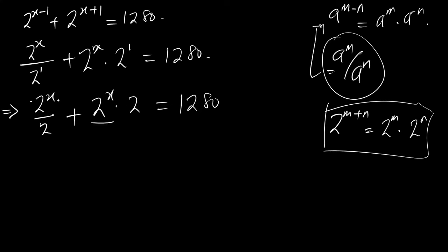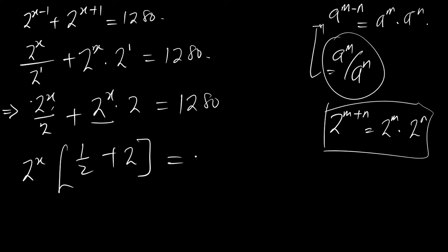Now, 2 to the power x is common to both terms on the left hand side. So we'll factor it out as 2 to the power x. If you now use 2 to the power x to divide, you have one half plus, and 2 to the power x divides 2 to the power x times 2, you have 2.